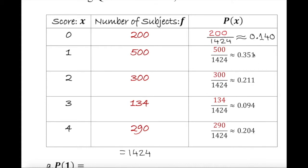These decimals are the probabilities we're interested in. You can round to two decimal places — that's fine too. All the values on the right side are the probabilities. Notice that 200 goes on top, 500 goes on top, 300, 134, and 290 all go on top, and we divide by the total. The sum of frequencies equals N total, so the general rule is probability equals f over N.